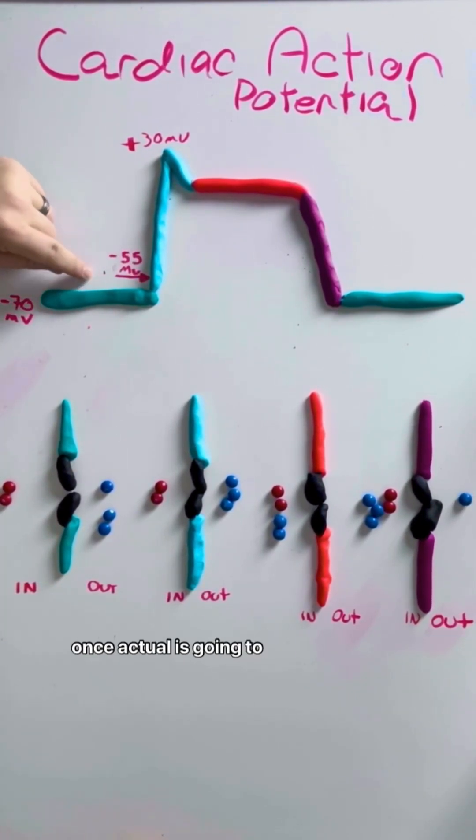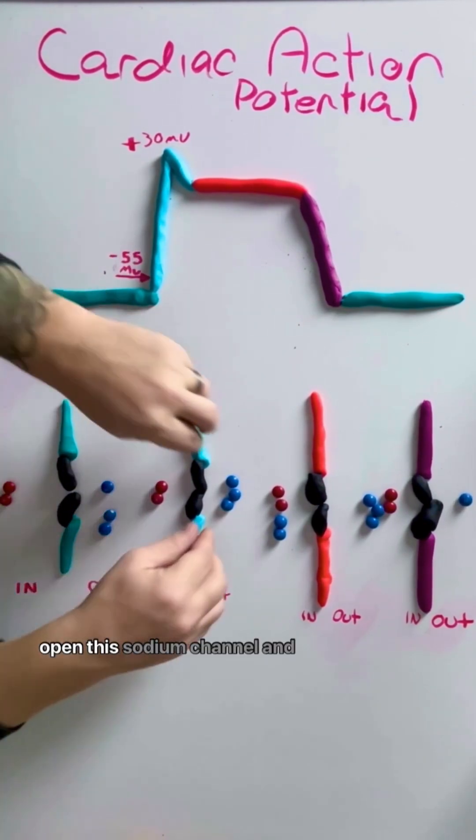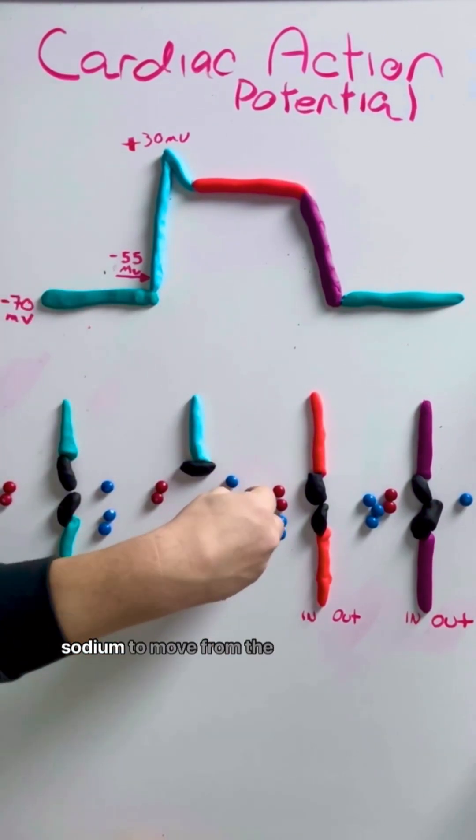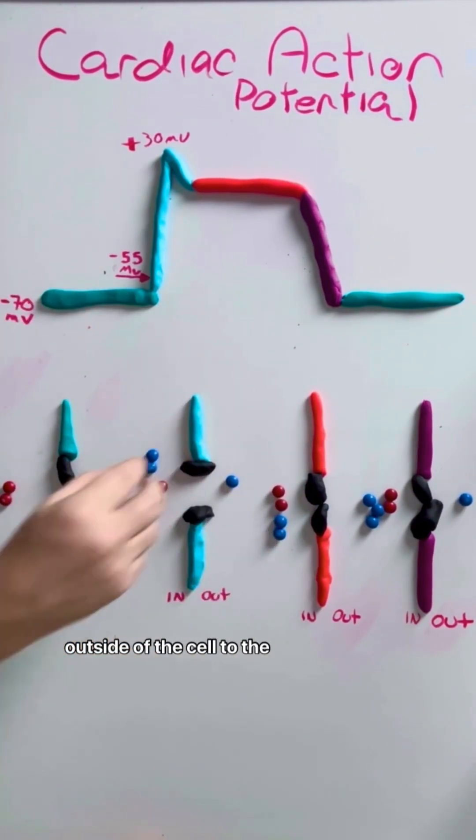And then once action potential is going to occur, we're stimulated, our nerves are stimulated, whatever the kind of case that is, what's going to happen is that we're going to open this sodium channel. And by opening this sodium channel, it's going to allow sodium to move from the outside of the cell to the inside of the cell.